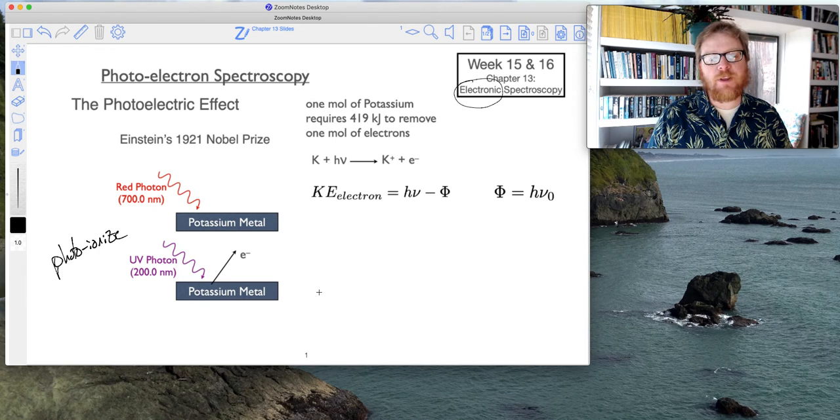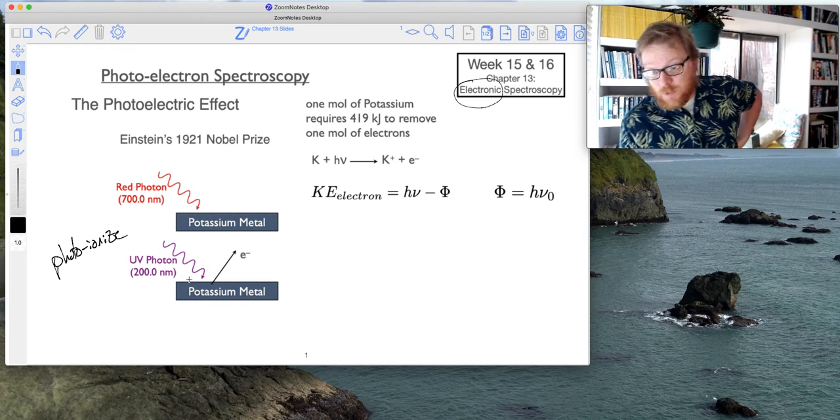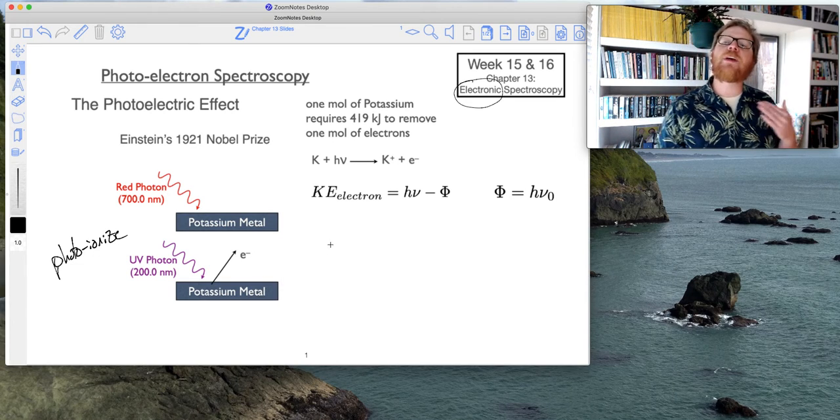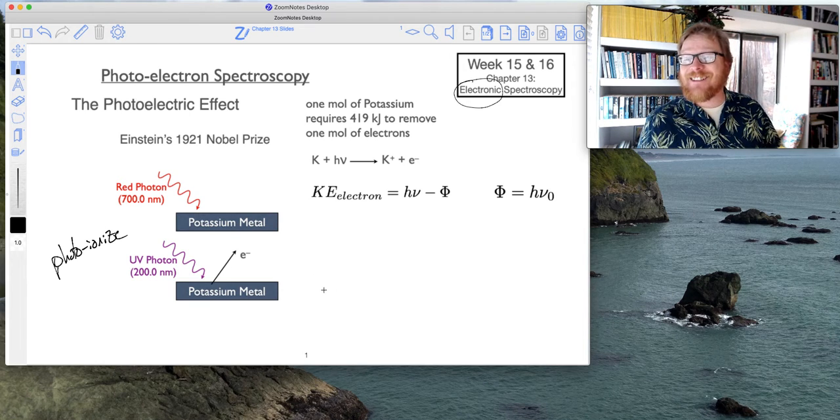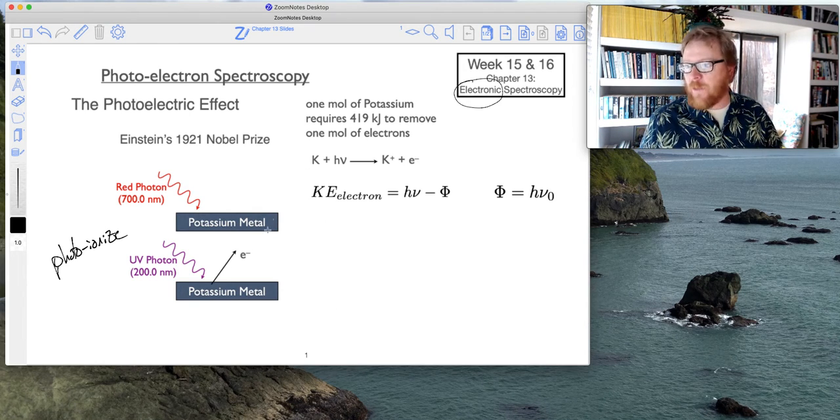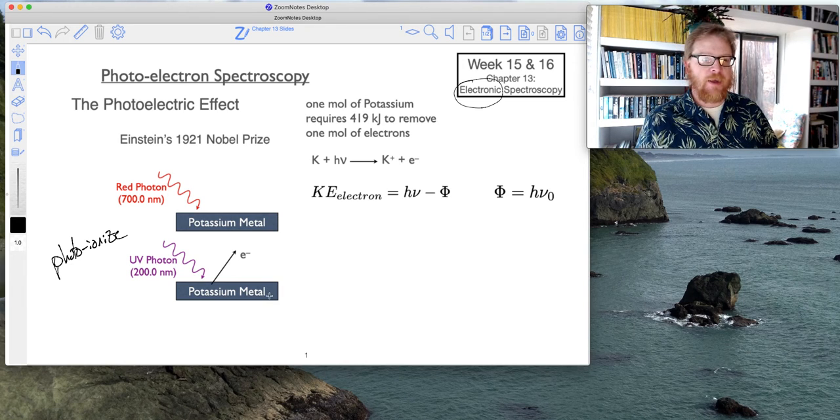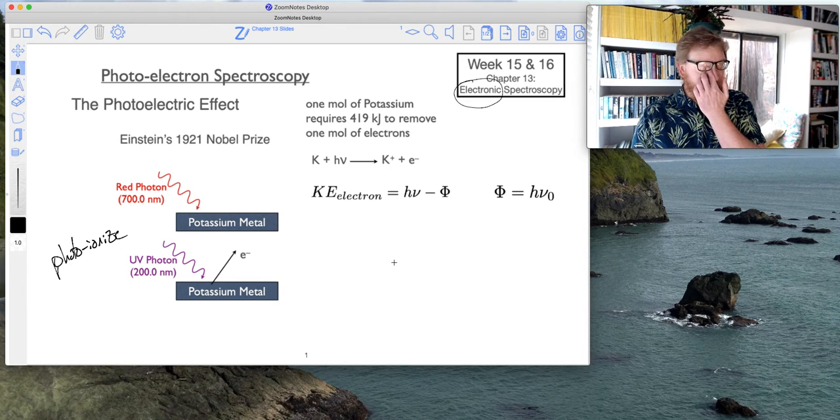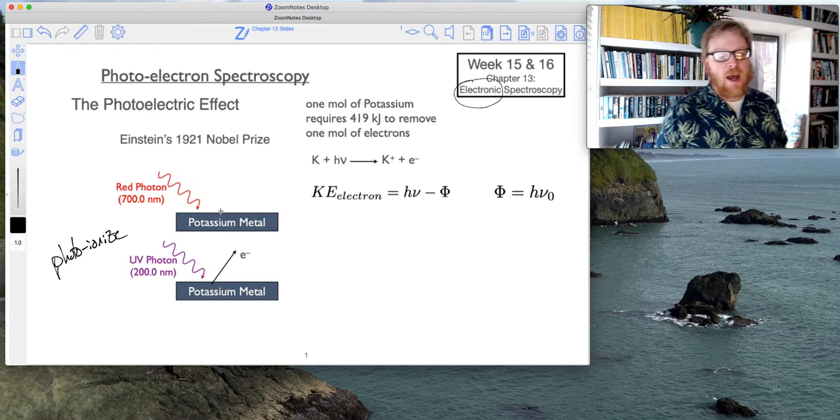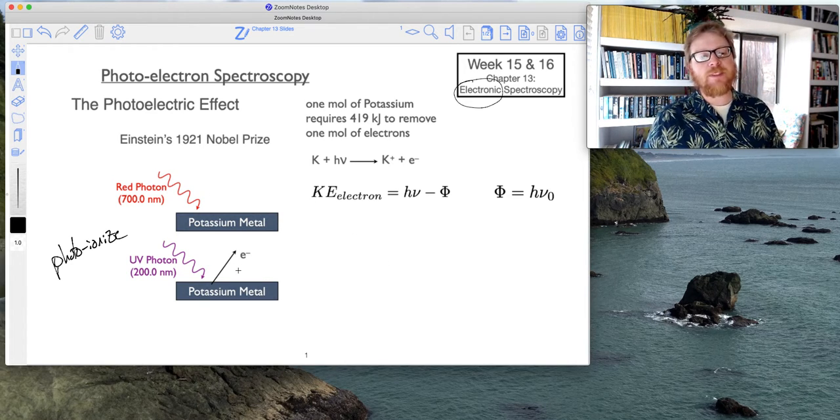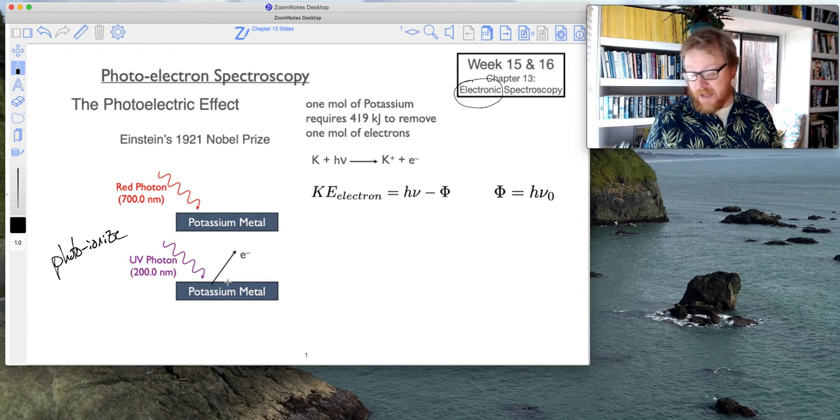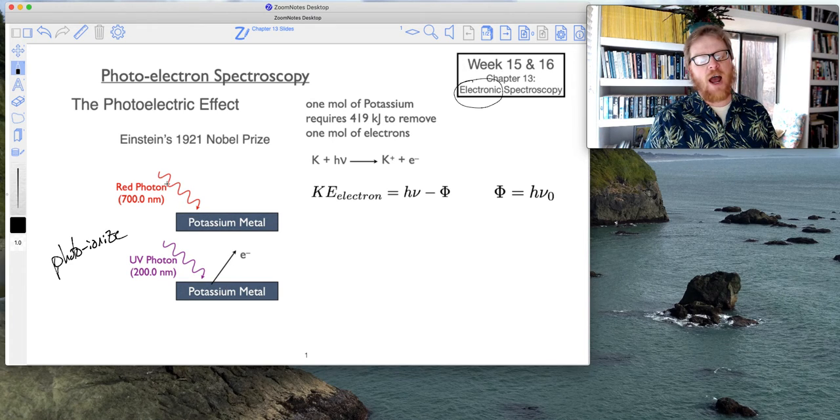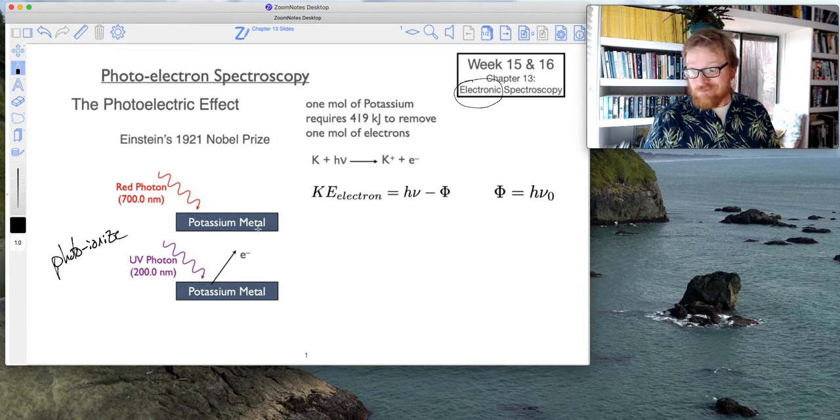Typically, we deal with solids in XPS. Some more recent techniques have shown how you can do liquids, but it's not straightforward. I'll talk about why we typically do solids. If you shine light with a certain frequency, that frequency has to be sufficiently large enough to induce photoionization. For example, if you shined red light, 700 nanometer light, on potassium metal, nothing would happen. It's not enough energy to ionize the potassium.